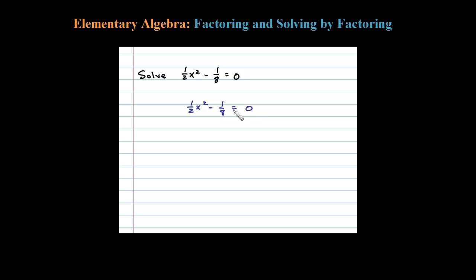This trick only works for equations. What we're going to do is multiply both sides by the LCD, the least common denominator here. So that is 8. If we multiply both sides by 8...